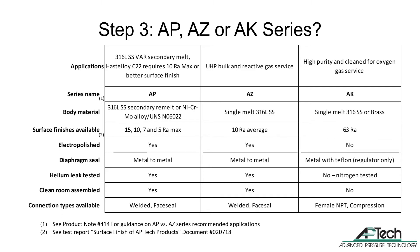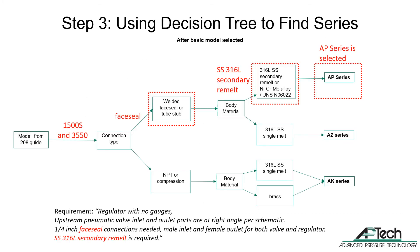Now that we've explained the uses and features of the three series, let's choose the best series for the example application. We've determined the model numbers: the 1500S and 3550. We can determine the series — AP, AZ, or AK — using the decision tree. The first question is, what connection type? The application requires face seal connections. This eliminates the AK option because it features NPT or compression connections, not face seal. The next question is, what body material? The requirement is secondary remelt 316L stainless steel, which is only available on the AP series. The AZ series features single-melt 316L stainless steel. The choice is AP.